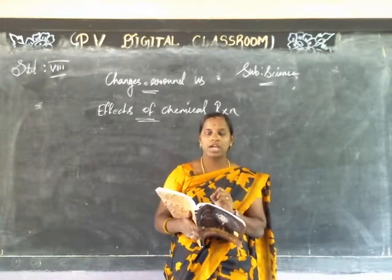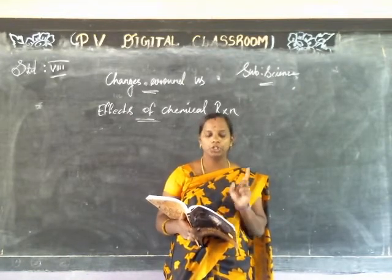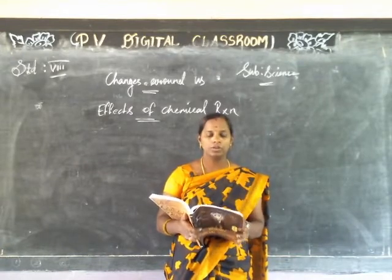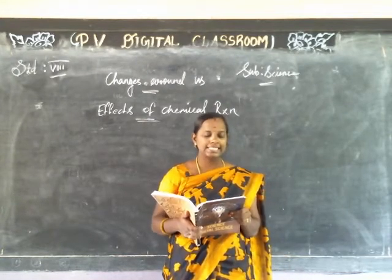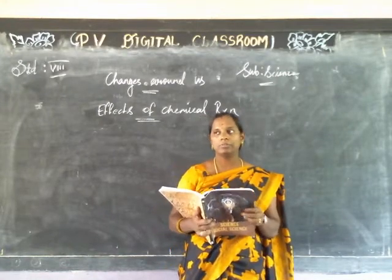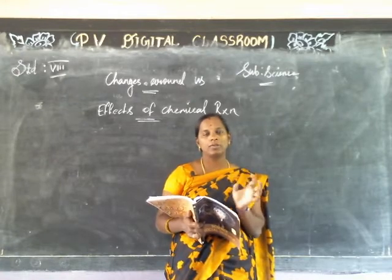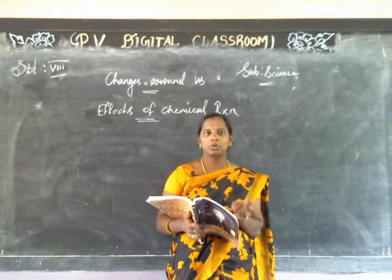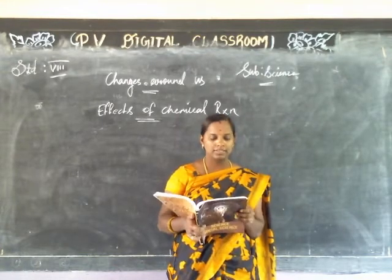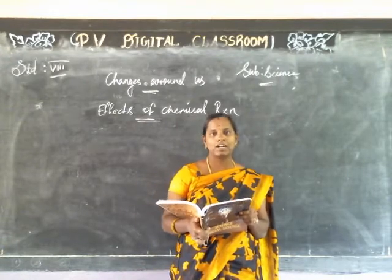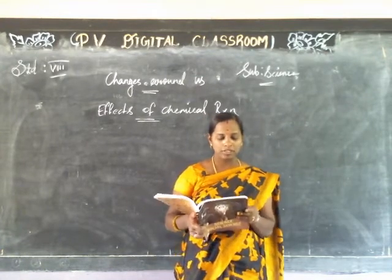What happens to steel benches and tables during rainy season? They turn red or brown. Iron metals come into contact with water and oxygen — that is why if we have a steel bench exposed to water and air, a reaction takes place causing it to rust.